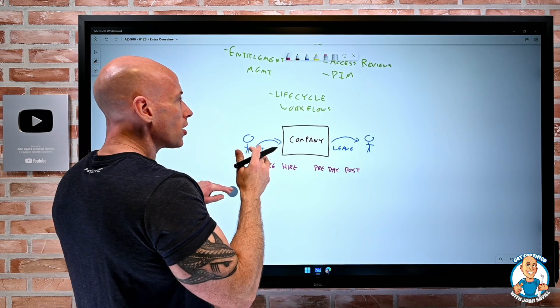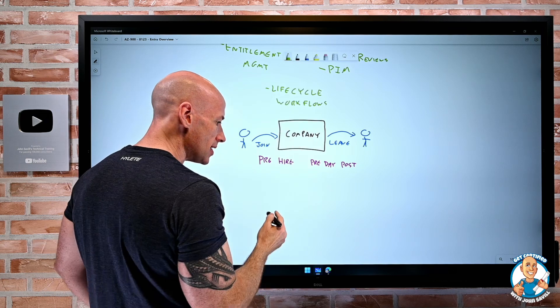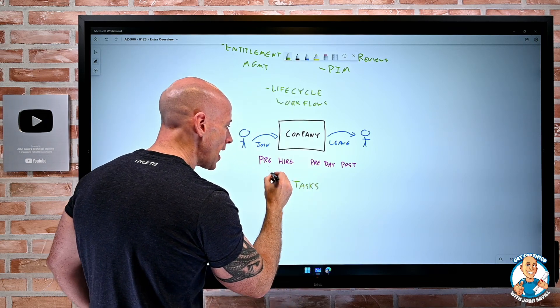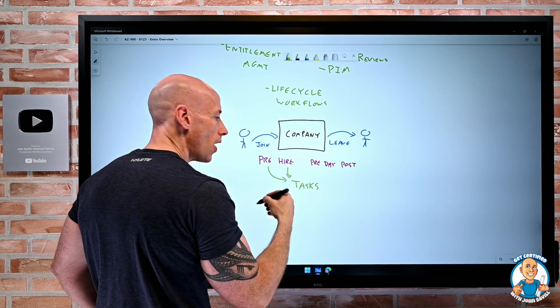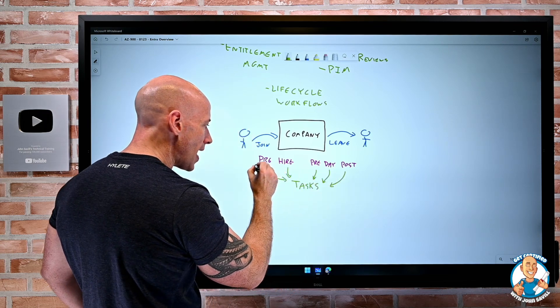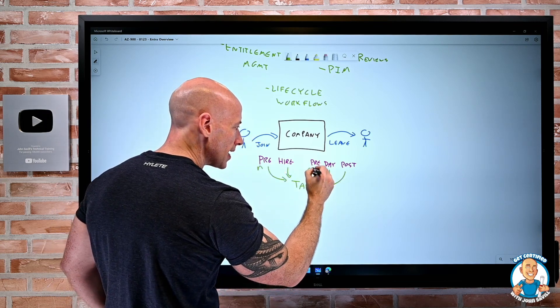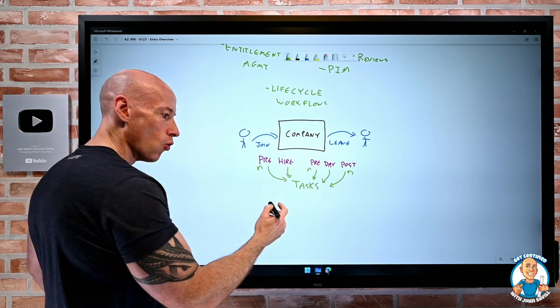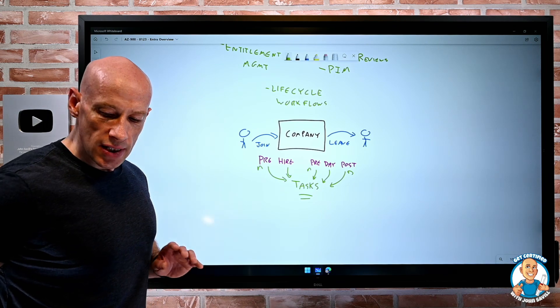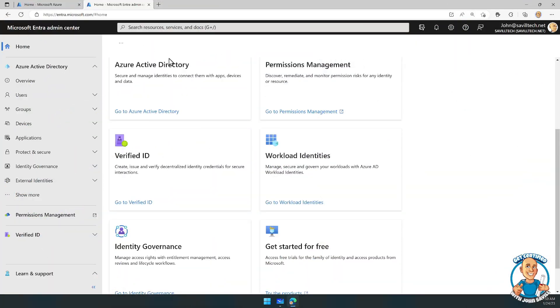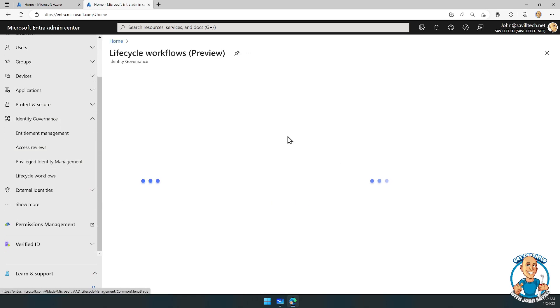And what Lifecycle Workflows does is for all of these, I can define a set of tasks that based on attributes of sort of hire date and leaving date, I can say a certain number of days before, on the day, and days post, perform these various tasks. And there's a whole set of these actually built in that you can base this off. So if I was to go and look at my Identity Governance and then Lifecycle Workflows, we'll see that I actually have some created for onboard pre-hire and then real-time employee termination.